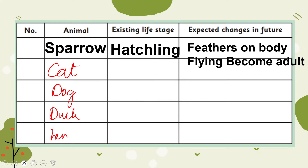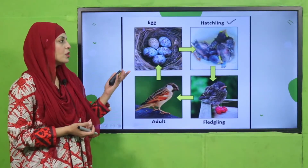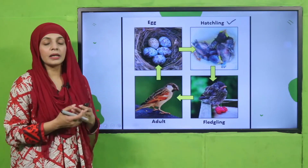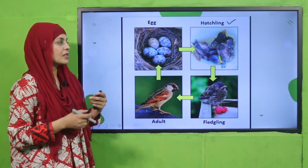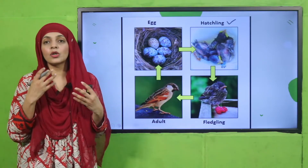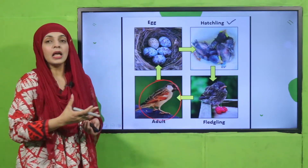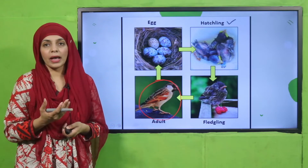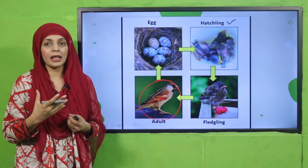So here is the sparrow example: I saw the eggs, they started hatching. After some time they started growing feathers, and then they became adults and were able to produce new eggs. These are the different stages expected in the sparrow's life cycle.